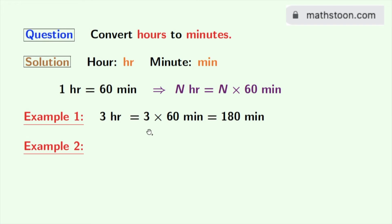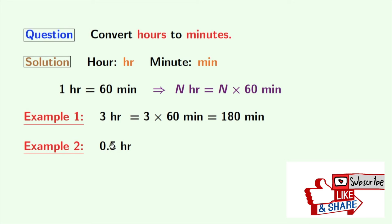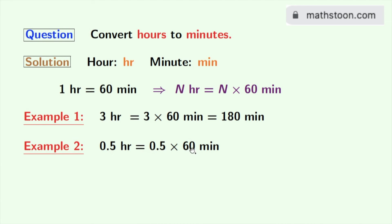Now we will consider another example which is 0.5 hours. Using this fact, we can write this as 0.5 times 60 minutes. As 0.5 is 1 by 2, we can write this as 1 by 2 times 60 minutes, which is equal to 30 minutes.